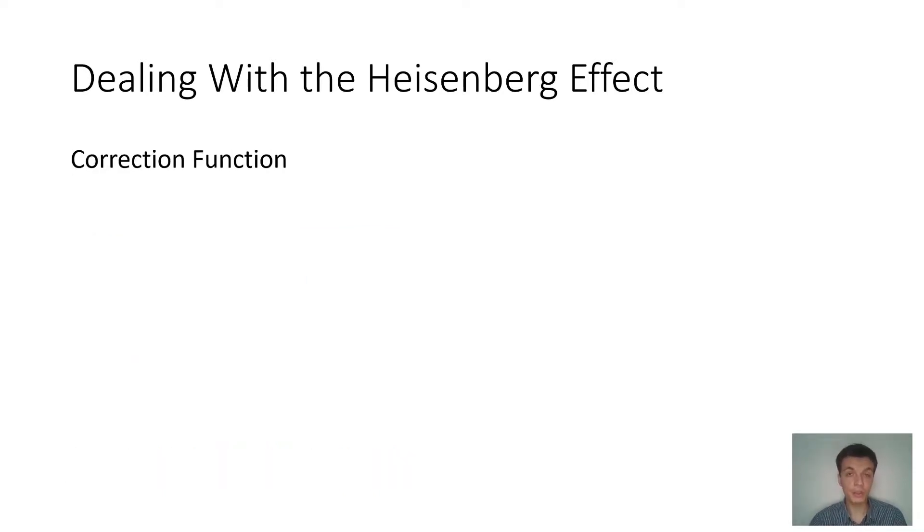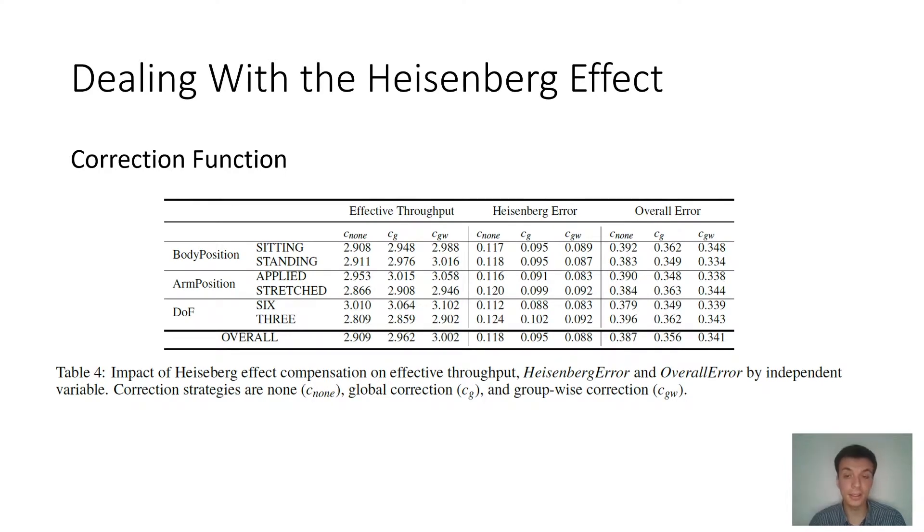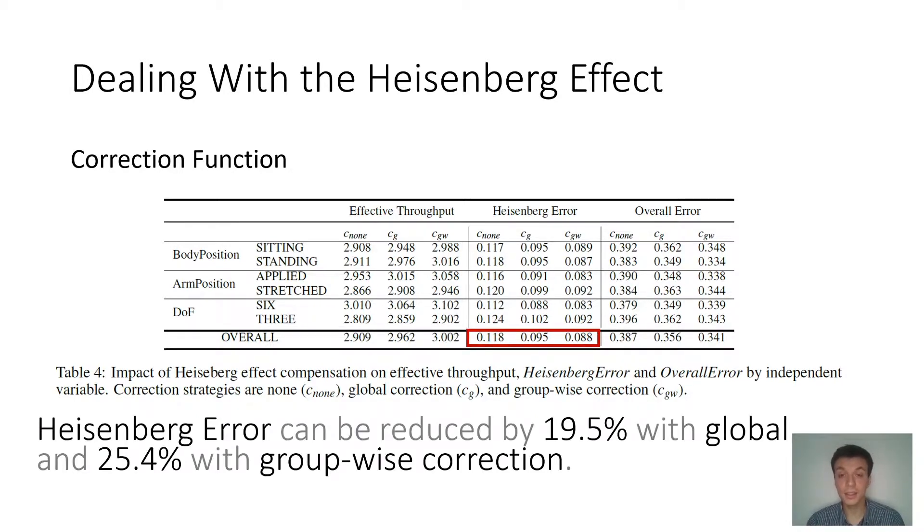What we propose as the final solution is to use a correction function. To this end, we collected the data of our offset vectors that happened globally, so disregarding the conditions, and by condition. This is what we call the global correction and the groupwise correction. If we look at the Heisenberg error, we can see that using a global correction, so just use the offset vector or the correction vector that we calculated that anybody could use, or anybody who uses the same trigger button.